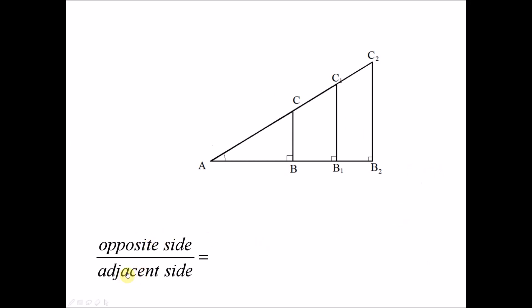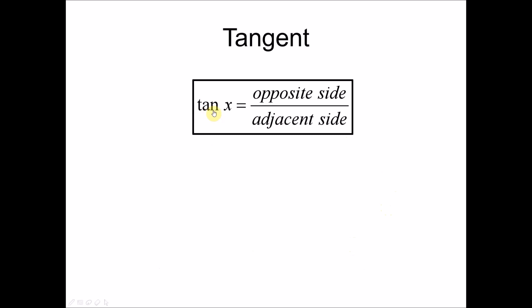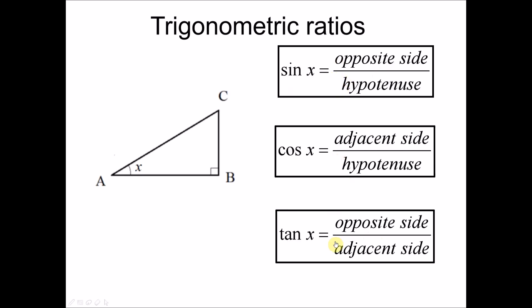The third ratio looks at opposite side over adjacent side. Using the same diagram, BC over AB gives a value that is the same for all the similar triangles — the ratio is constant. We name this trigonometric ratio tangent: tangent x equals opposite side over adjacent side. So you have three trigonometric ratios — sine, cosine, and tangent — to memorize.